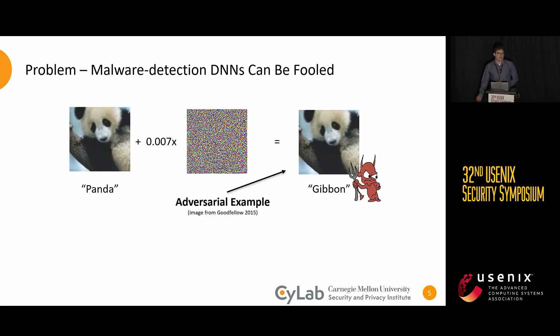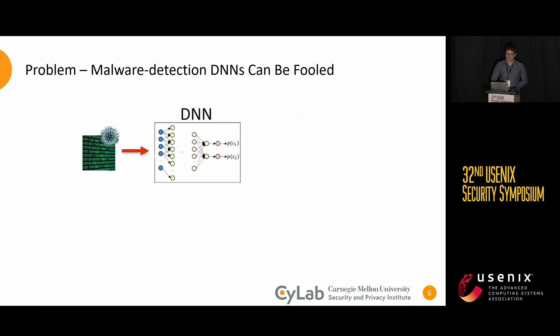However, like in the image domain, machine learning algorithms can be fooled by just slightly perturbing the input. In these cases, the input looks the same to us, but the otherwise accurate classifier gets it wrong. These inputs are referred to as an adversarial example.